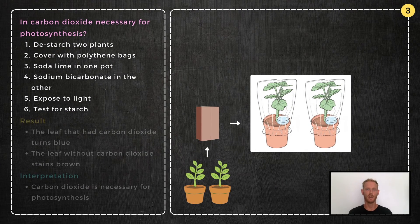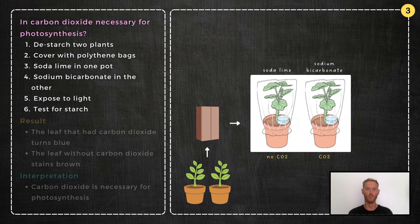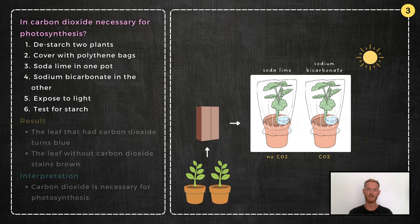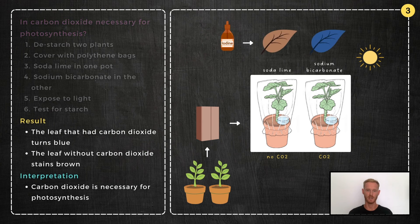Experiment 3: Is carbon dioxide necessary for photosynthesis? Cover two destarched plants with clear polythene bags. Place a dish of soda lime in one pot and a dish of sodium bicarbonate in the other. Plant A is the experiment, as soda lime absorbs carbon dioxide, and plant B is the control, as sodium bicarbonate releases carbon dioxide. Expose both plants to light for several hours, remove a leaf from each, and test for starch. The leaf that had no carbon dioxide remains brown, showing that no starch was produced and that carbon dioxide is necessary for photosynthesis.